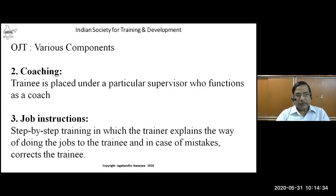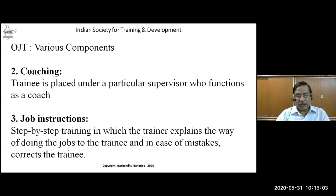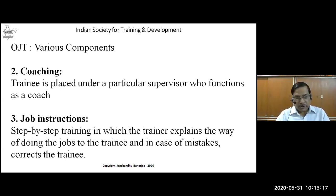Job instructions involve step-by-step training in which the trainer explains the way of doing the job. You divide the whole job into small tasks and write instructions for each task — what to do — then leave it for the trainees to learn by following those instructions. In case of any mistakes, you correct the trainee. If the trainee follows the instructions and you have a monitoring system for correcting, then learning happens through working on these instructions.